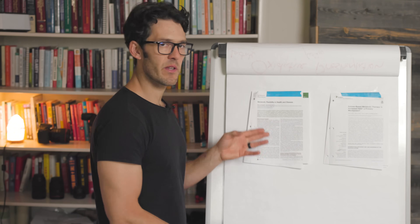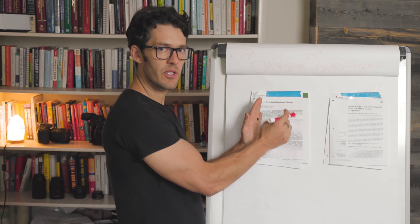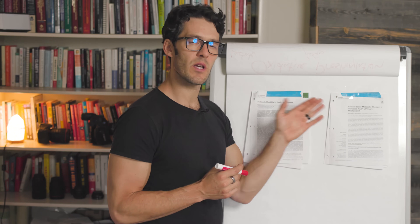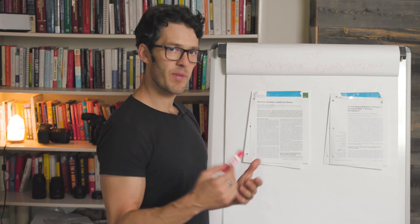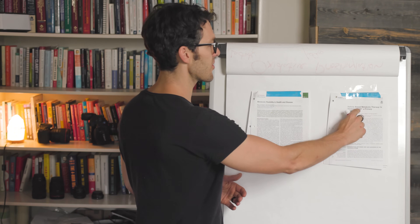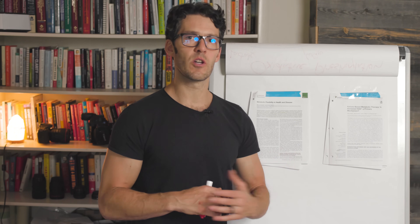Now that we have a foundation in lipolysis, beta oxidation, the Krebs cycle, the electron transport chain, and oxidative phosphorylation, we can take a deeper dive into metabolic flexibility. I also want to highlight this paper by Susan Massino on ketone-based metabolic therapy titled 'Is Increased NAD a Primary Mechanism?' — diving into why high NAD levels created through nutritional ketosis could be one of the many reasons why the ketogenic diet is effective, particularly within the brain.